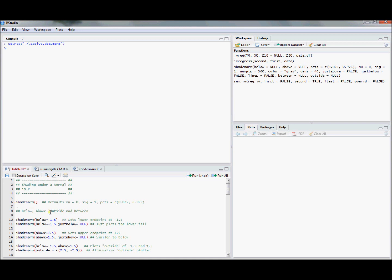There are some nice defaults to the shade norm command. It defaults to a normal 01, standard normal, and it defaults to percentiles of 2.5 percentile and the 97.5 percentile. So if we run this line, we'll see this.